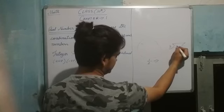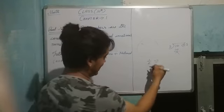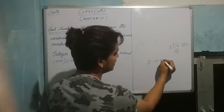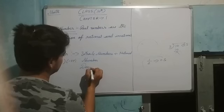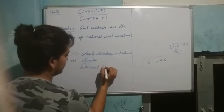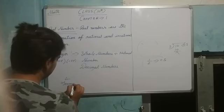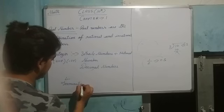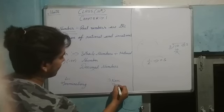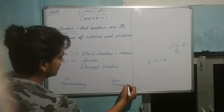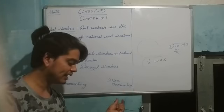If we convert a fraction to decimal, for example 1 by 2 becomes 0.5 — we call it a decimal. So there are two types of decimal settings: terminating and non-terminating.